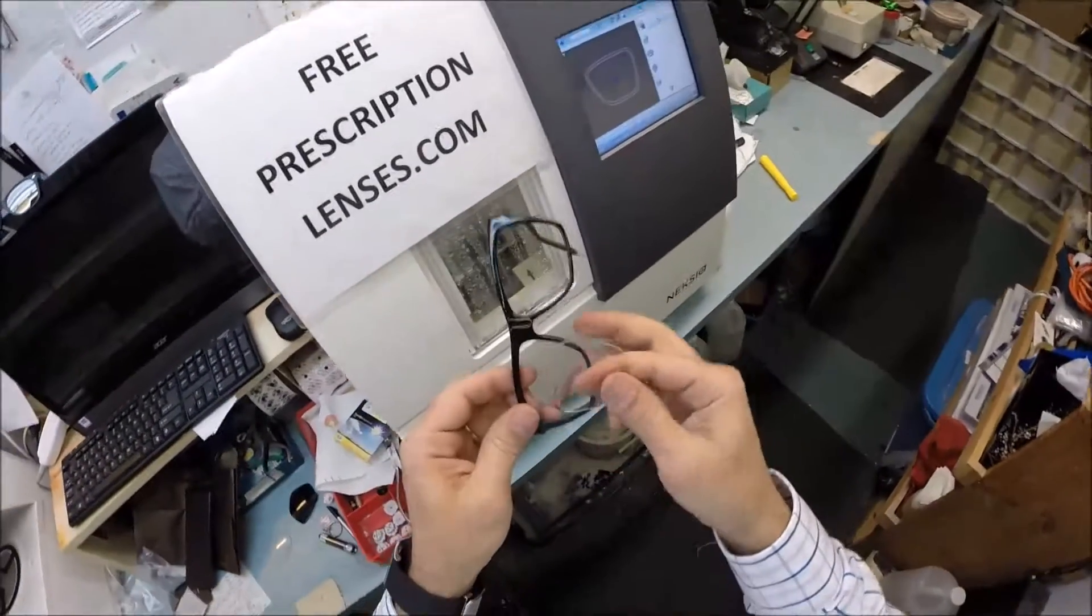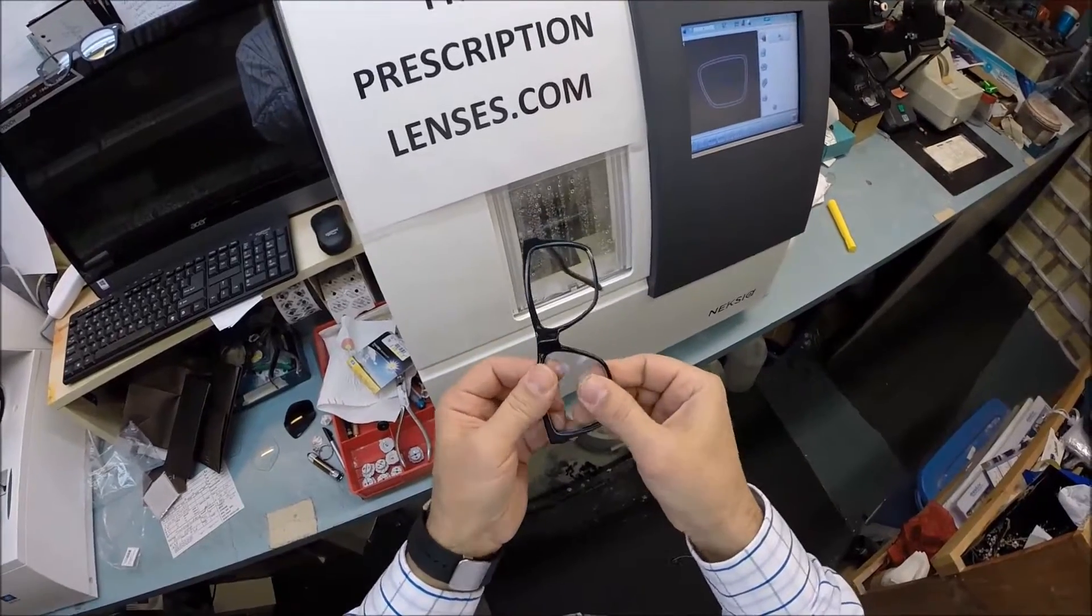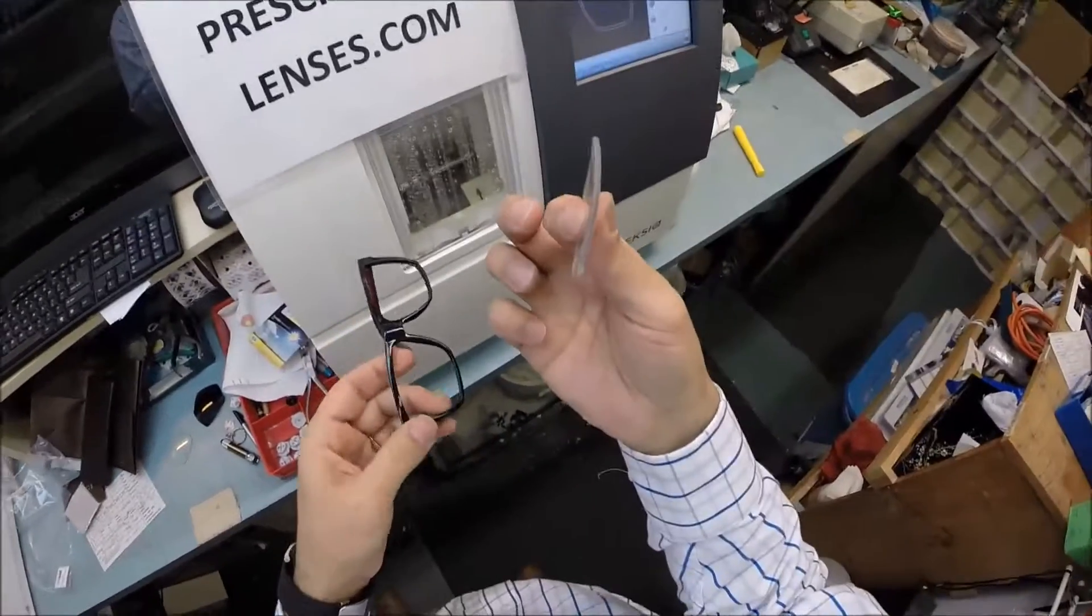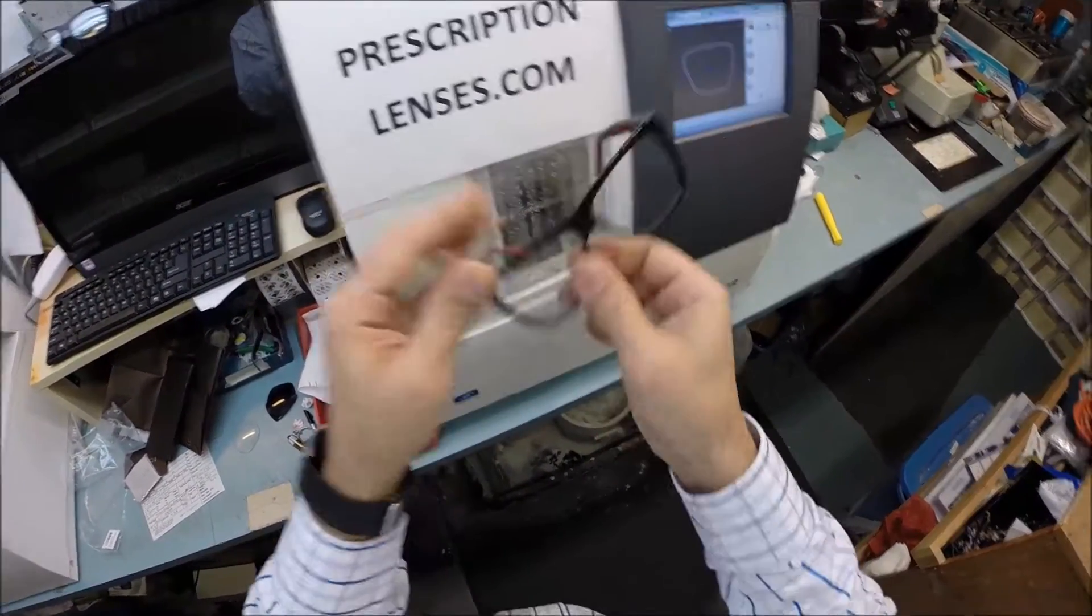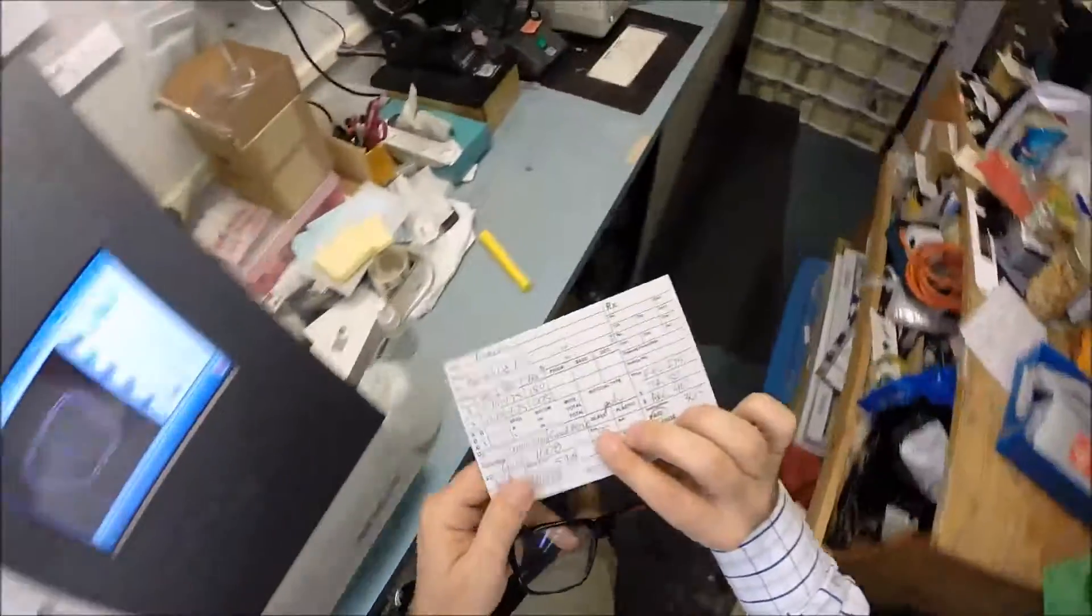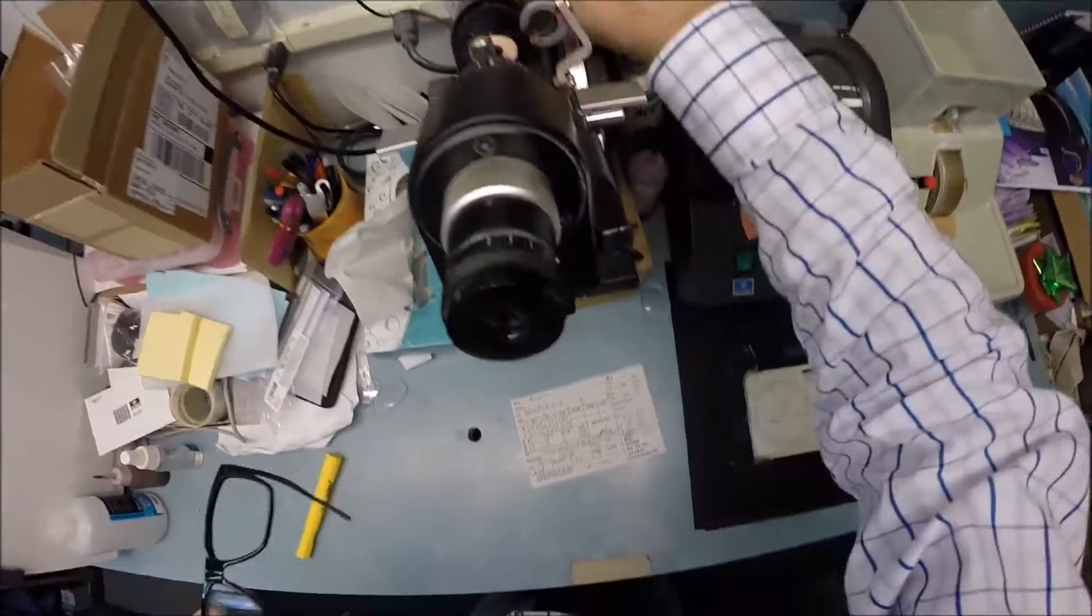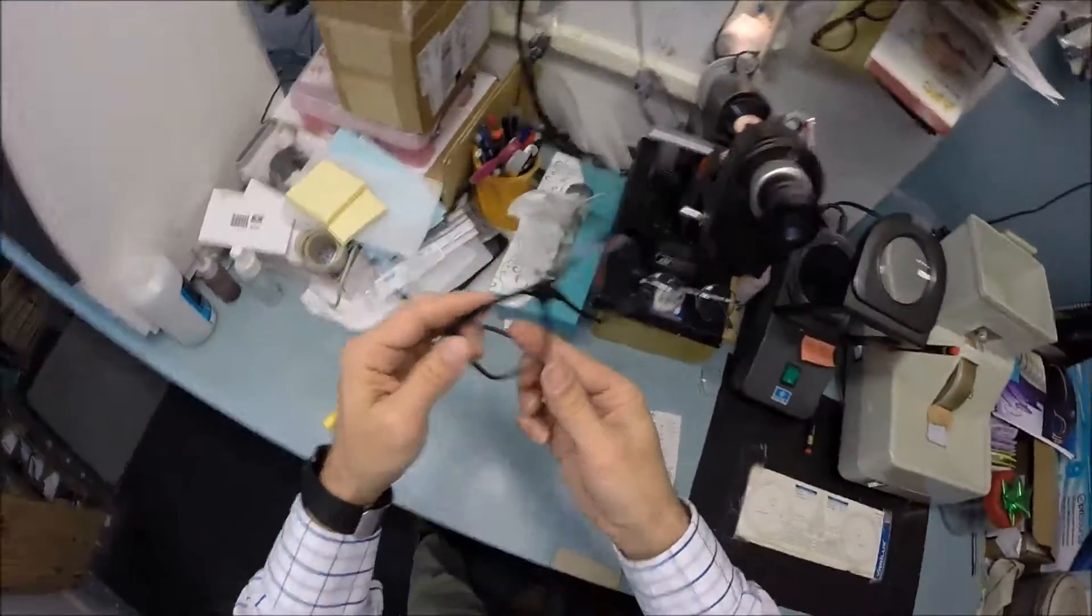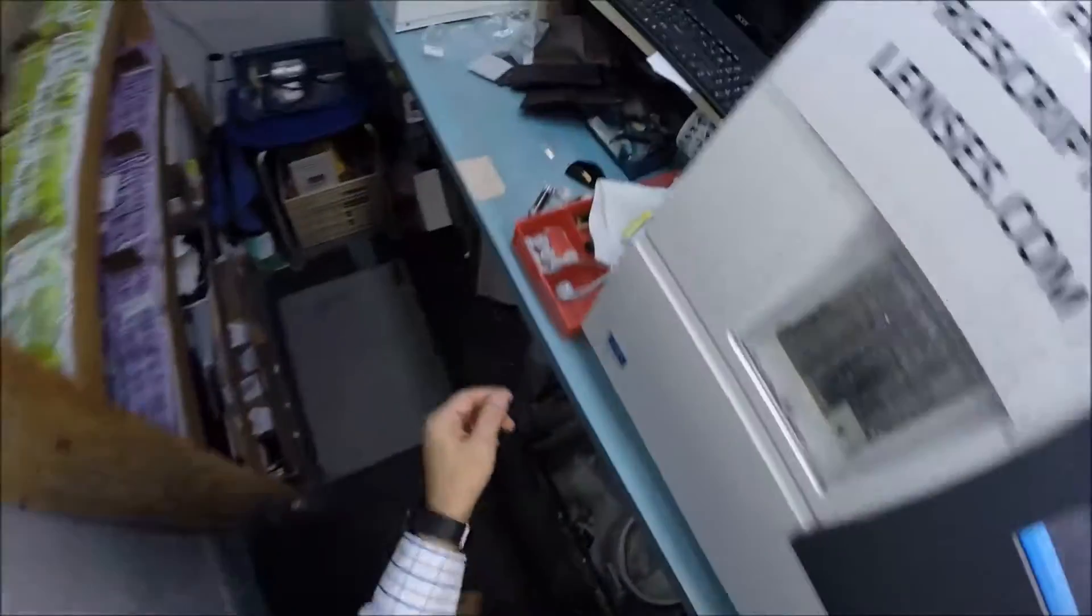I'm going to go ahead and inspect your right lens. I'm going to spin the axis wheel back to 180, which is zero. Put it in over that red dot that I still have on your lens, which is your optical center. Spin the axis wheel and I'm getting minus 75.